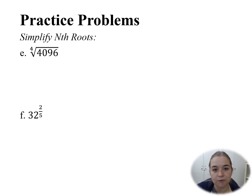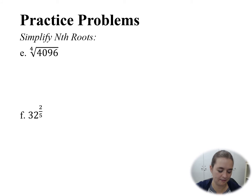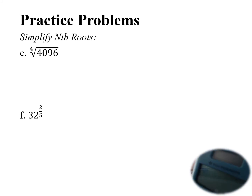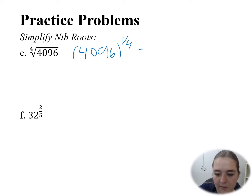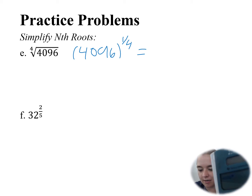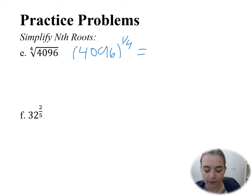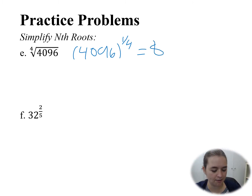Now let's talk about our nth roots. There are two ways to solve these. If you have a calculator like mine, you can use the x-root button to find the fourth root directly. The other approach is to recognize that the fourth root of 4096 is really 4096 raised to the power of 1 fourth. On the calculator, type 4096, then use the caret button, then type 1 fourth or 0.25 — those are equivalent. The answer is 8. To check: 8 times 8 times 8 times 8 equals 4096.